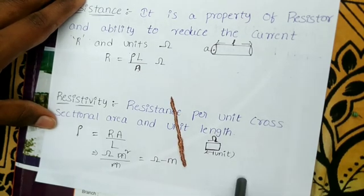Next is Conductance. It is the reciprocal of resistance. G is equal to 1 by R. Since R is equal to rho L by A, conductance G equals A by rho L. That is the formula for conductance.